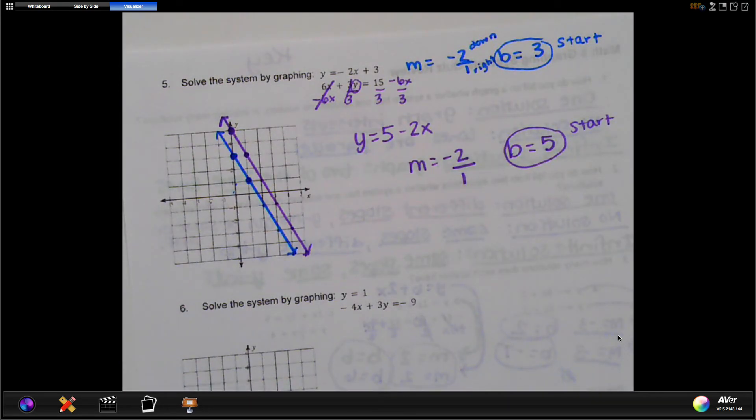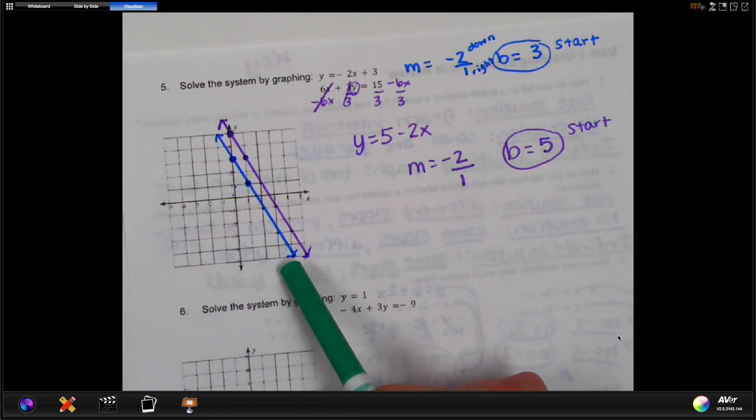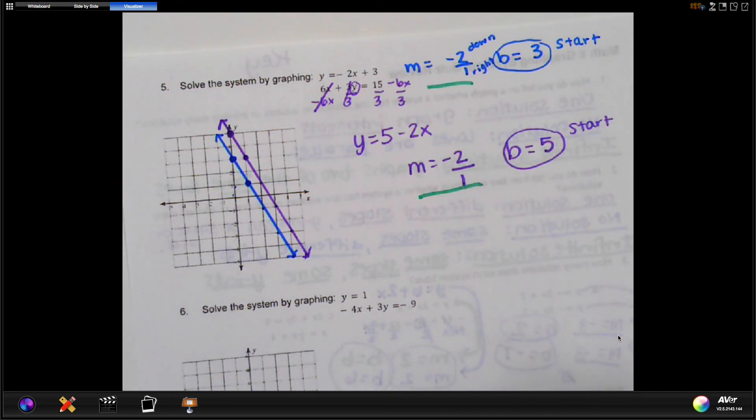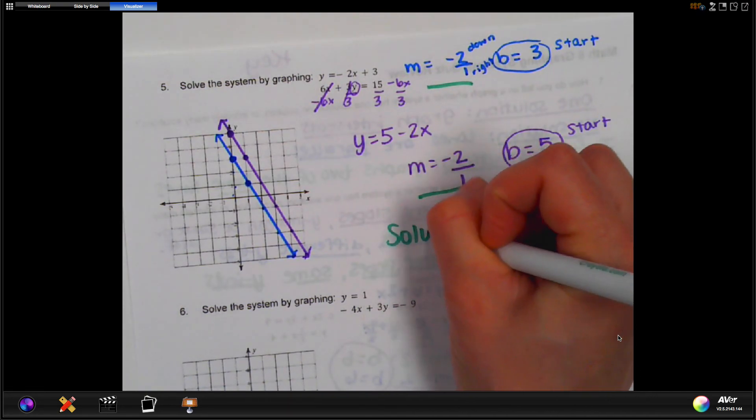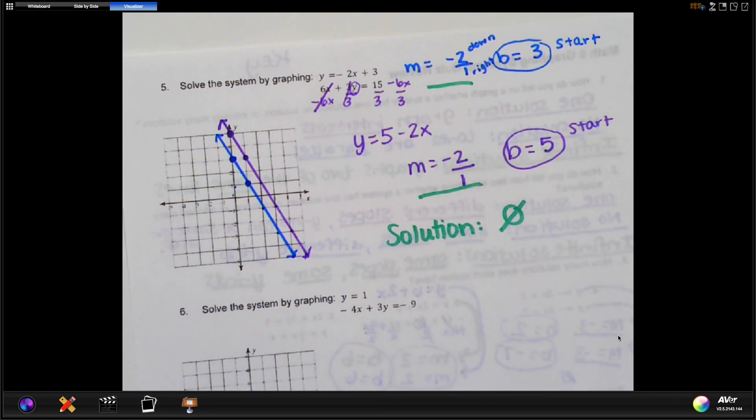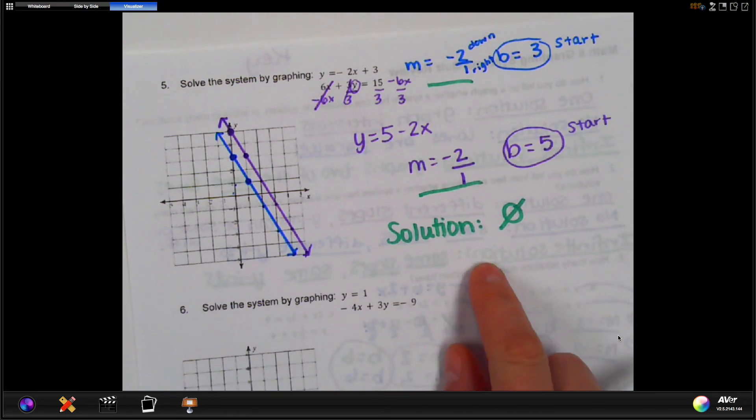Now, the answer, the solution to the system, is where they cross. But as you can see, these turn out parallel, which we saw before. It has the same slope, so those ones are going to be parallel. So the solution to this system is actually no solution. If they did cross, remember the solution to this system would be the ordered pair that they cross at.